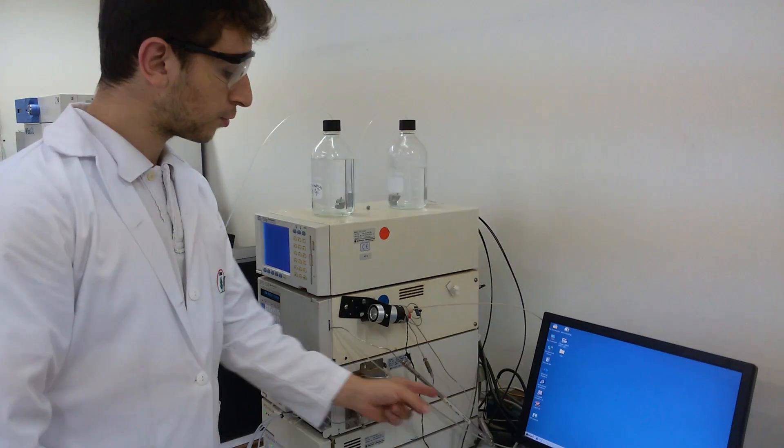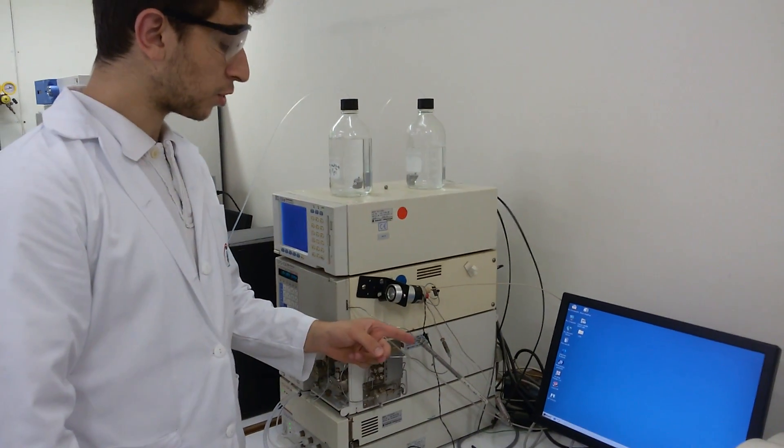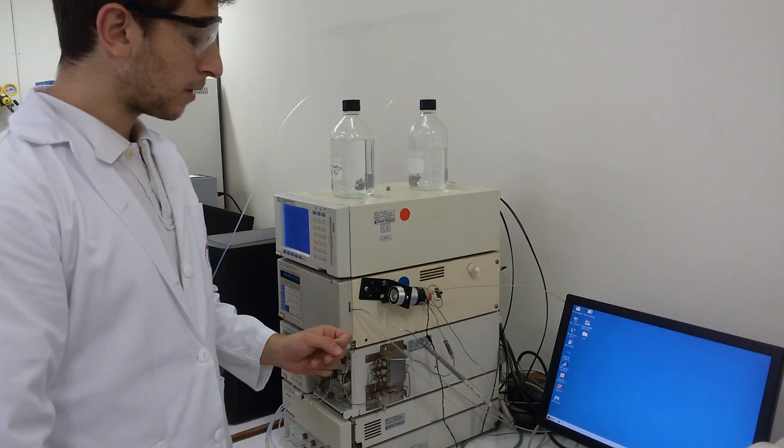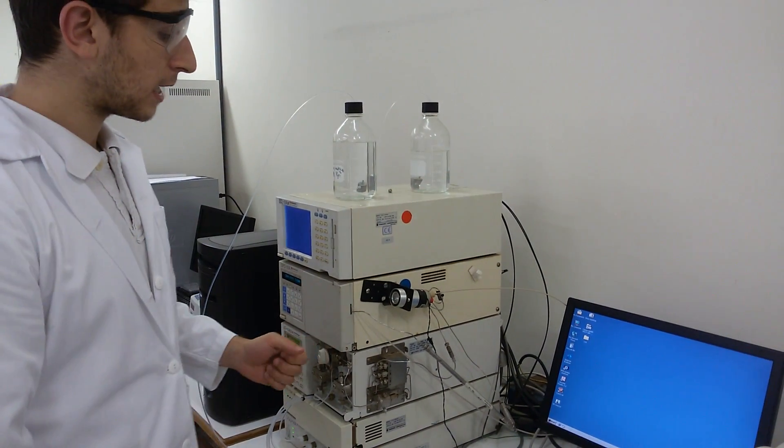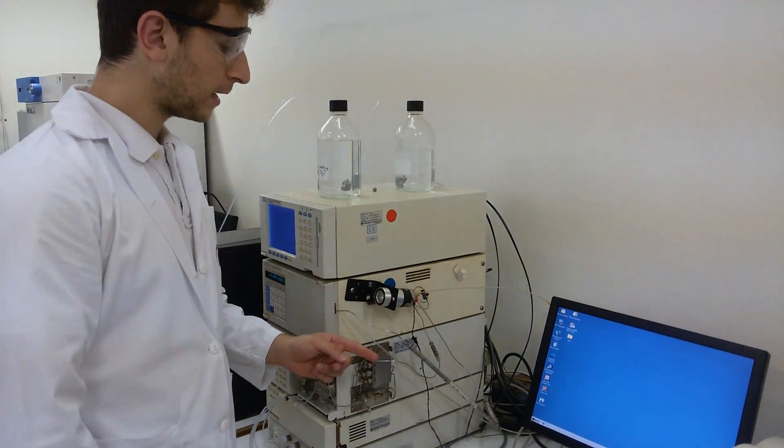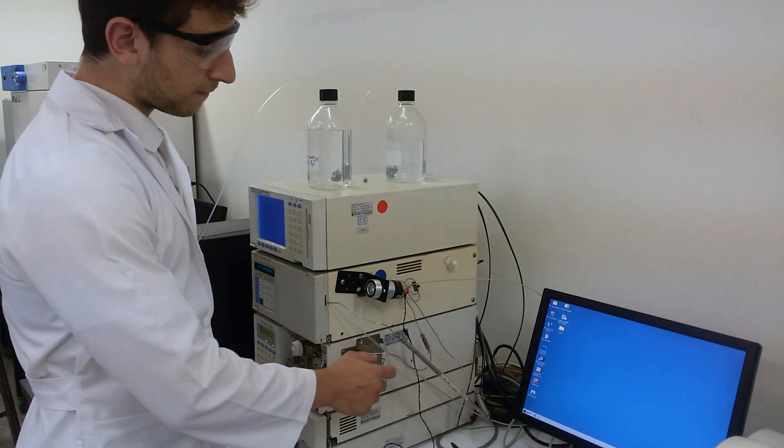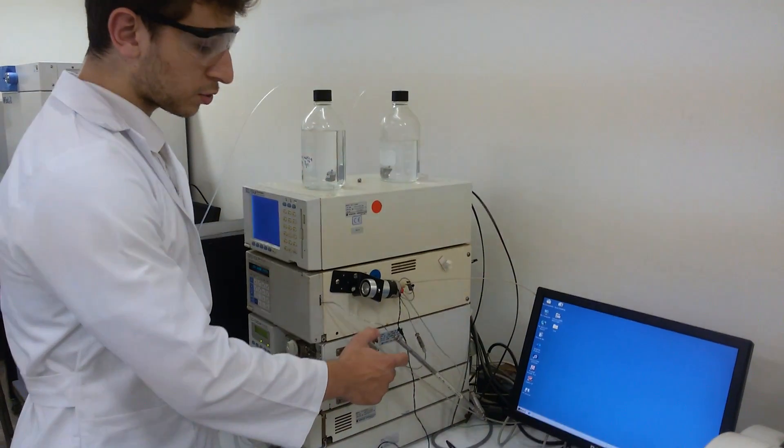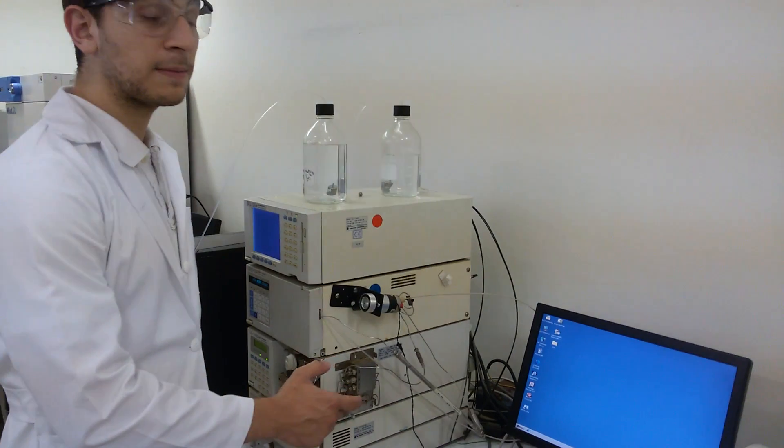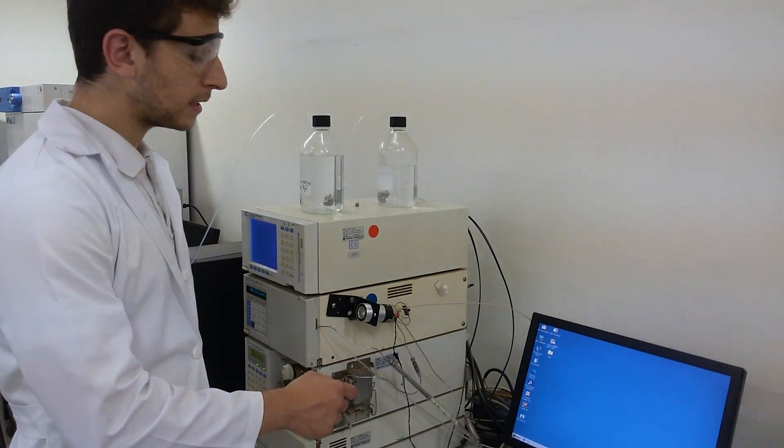Then, our sample will move through the column. The separation, all of the separation occurs inside. The components of our sample, which are aspirin, acetaminophen, and caffeine, will be separated inside. Because our stationary phase contains silica, which is extremely polar, and embedded with carbon, which is extremely unpolar.